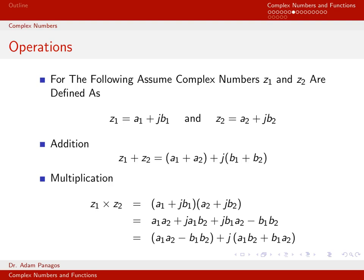That's the end of this video. We've reviewed basic operations for complex numbers: addition, multiplication, conjugation, phase, and magnitude. We also looked at the special cases of taking the magnitude and angle of a ratio of complex numbers. All examples were done symbolically with a's and b's. In the next video, we'll do specific examples replacing symbols with actual numerical values.